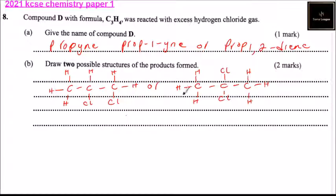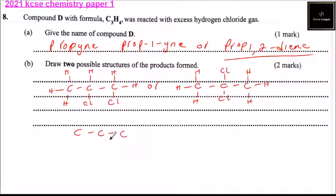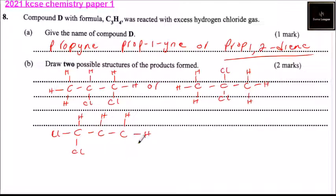With chlorines on positions one and two, we can write the structural formula like this: carbon, carbon, carbon — with chlorine here and chlorine here on adjacent carbons, and hydrogen atoms filling the remaining bonds: hydrogen, hydrogen, hydrogen, hydrogen, and hydrogen.